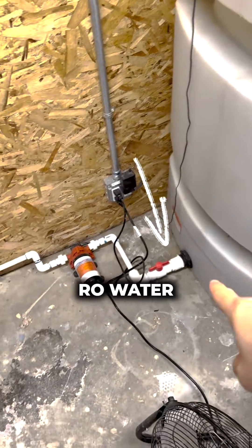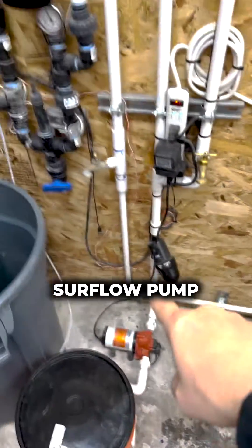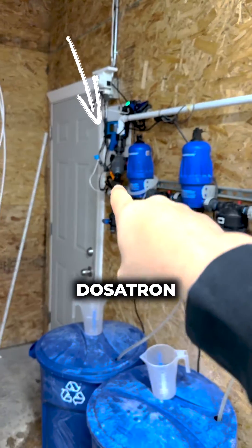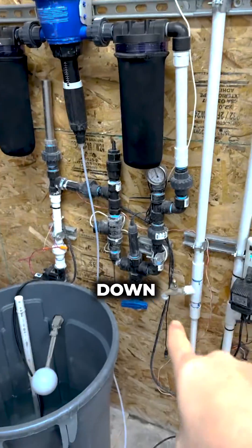Out of RO water into a SureFlow pump. From SureFlow pump it feeds over to the Dosatron, through the Dosatron, and down.